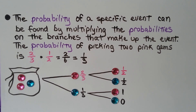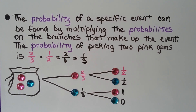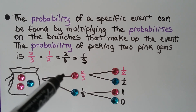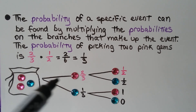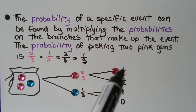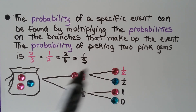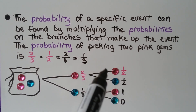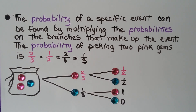The probability of a specific event can be found by multiplying the probabilities on the branches that make up the event. So the probability of picking two pink gems — we pick a pink one and then pick a pink one again — would be two-thirds times one-half. Two-thirds times one-half is two-sixths, which simplifies to one-third. So we have a one-third probability of picking a pink gem and then picking a pink gem again.